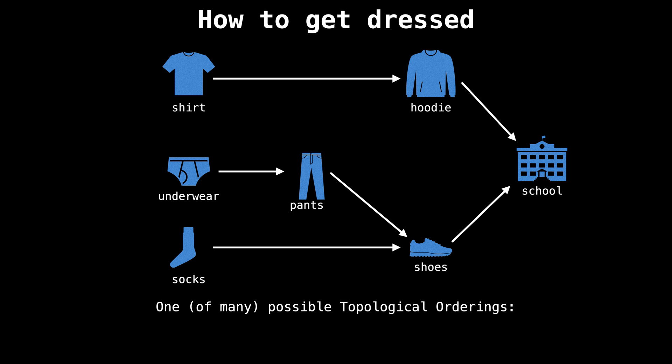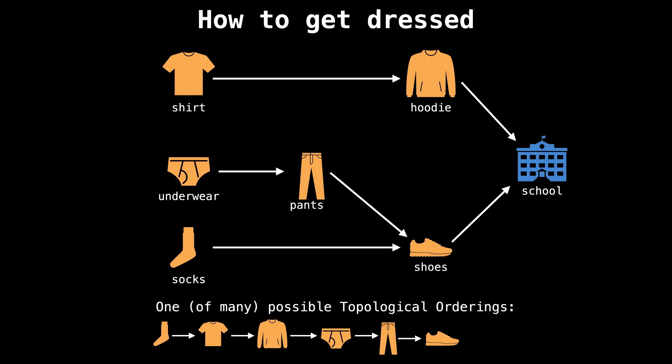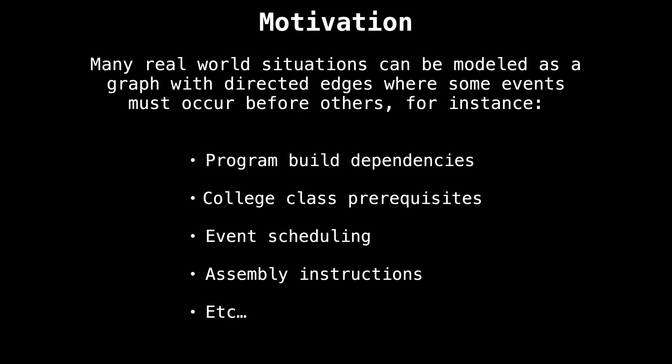For this particular situation, one possible valid topological ordering on how to get dressed is: first put on your socks, then your shirt, followed by your hoodie, underwear, pants, shoes, and then you're ready for school. Of course, there's more than one way to get dressed. You could have put on your underwear before putting on your socks, or put on your shirt after having put on your pants. Let me know in the comments what your favorite topological ordering is for getting dressed.